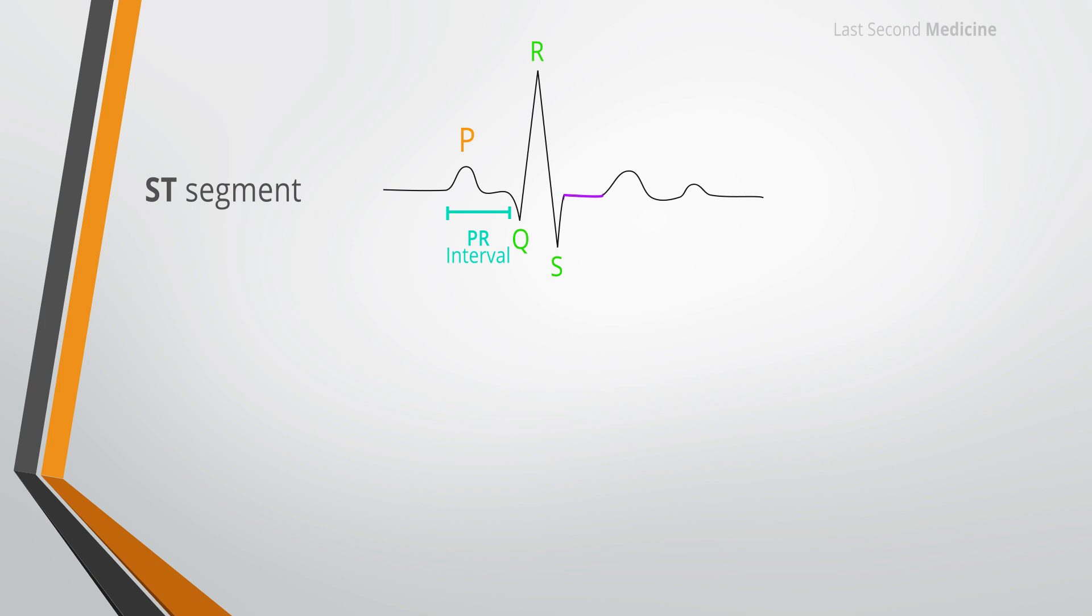After the QRS complex comes the isoelectric part, the ST segment. The ST segment lies between the J point and the beginning of the T wave and represents the period between the end of ventricular depolarization and the beginning of repolarization. This segment is particularly important in clinical practice due to its association with changes seen in cardiac ischemia. The ST segment should be level with the subsequent TP segment and is normally fairly flat though it may slope upward slightly before merging with the T wave.